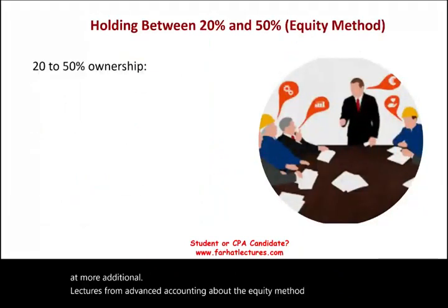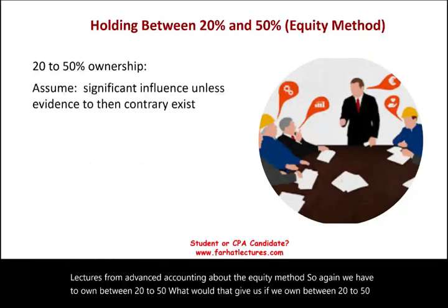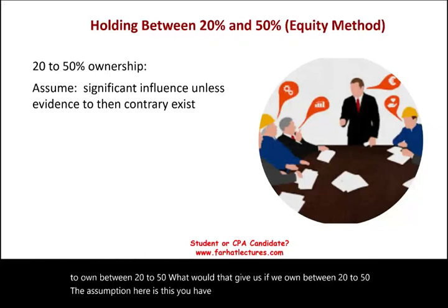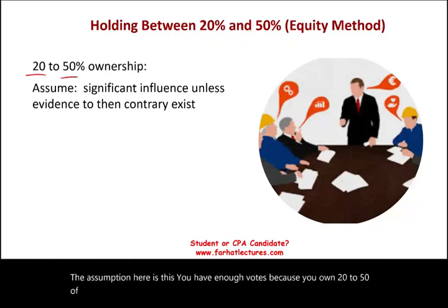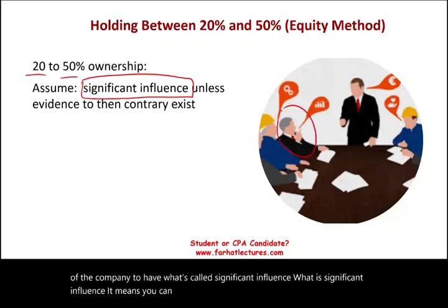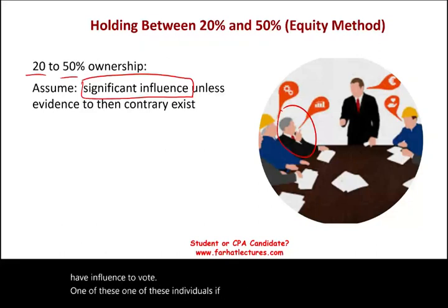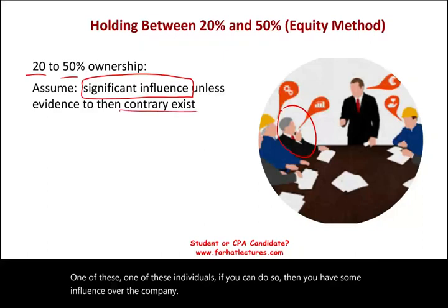We have to own between 20 to 50%. What would that give us? The assumption is this: you have enough votes — because you own 20 to 50% of the company — to have what's called significant influence. What is significant influence? It means you can vote one of the board of directors onto the board, meaning you have some influence over the company. Unless evidence to the contrary exists.